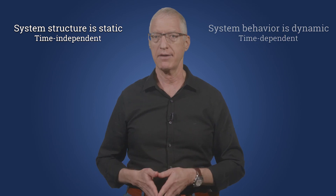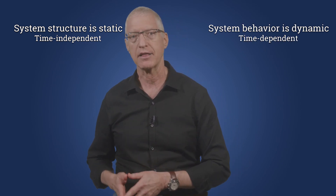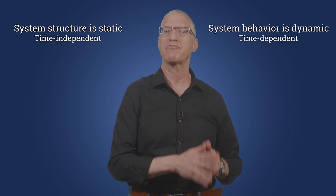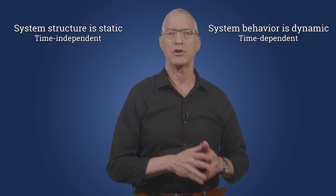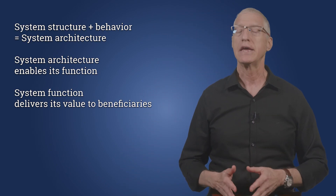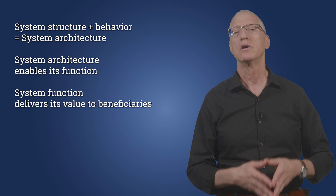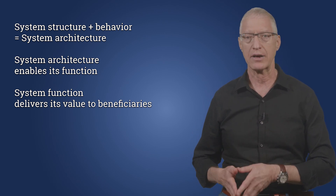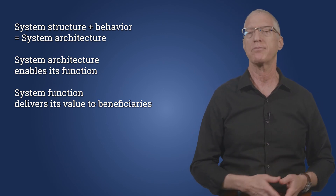A quick reminder from the basic course: the structure of a system is its static, time-independent aspect, represented in OPM using objects and structural links. The behavior of a system is its dynamic aspect, which is represented by processes and procedural links that connect processes with the objects they transform. The combination of the system structure and behavior is the system's architecture, which enables the system to function and provide value to its beneficiaries.